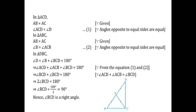Substituting: instead of angle D I write angle ACD (from the first equation), and instead of angle B I write angle ACB (from the second equation). So angle ACD plus angle ACB plus angle BCD equals 180°. Now, angle ACD plus angle ACB together forms angle BCD. So angle BCD plus angle BCD equals 180°, giving 2 × angle BCD equals 180°, therefore angle BCD equals 90°. Hence, angle BCD is a right angle.